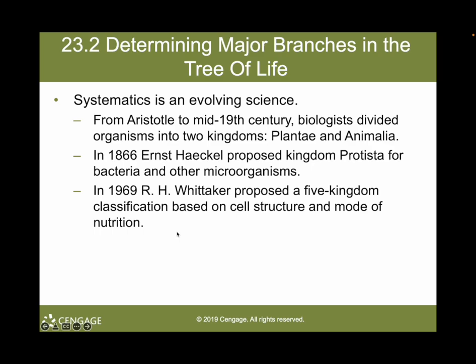From the time of Aristotle to the mid-19th century, biologists divided organisms into two kingdoms: Plantae and Animalia. After the development of microscopes, it became increasingly obvious that many species could not be easily assigned to the plant or animal kingdom. For example, the unicellular organism Euglena was classified at various times in both kingdoms but did not really fit either — it carries on photosynthesis in the light, but in the dark it uses flagella to move and search for food. In 1866, the German biologist Haeckel proposed that the kingdom Protista be established to accommodate bacteria and other microorganisms.